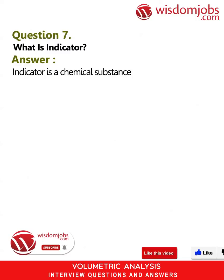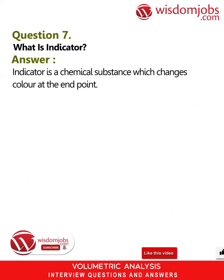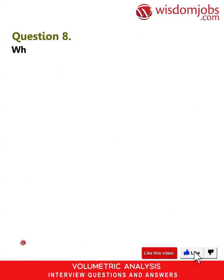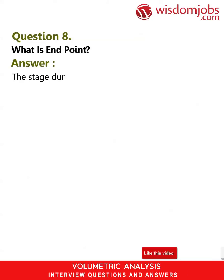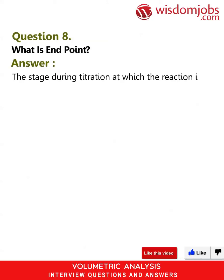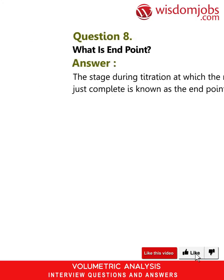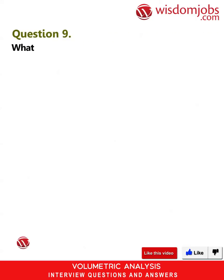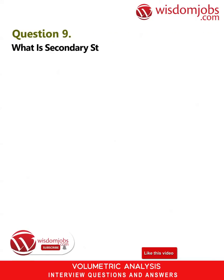Question 7: What is an indicator? Answer: An indicator is a chemical substance which changes color at the end point. Question 8: What is the endpoint? Answer: The stage during titration at which the reaction is just complete is known as the end point of titration.